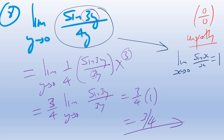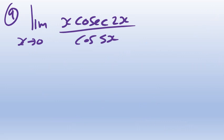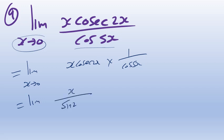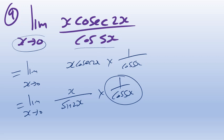Next problem: as x → 0, the denominator cos(0) = 1, which is fine. But cosec bothers me. I rewrite it as x · cosec(2x) · 1/cos(5x), which becomes x over sin(2x), times 1 over cos(5x). The 1/cos(5x) is well-behaved as x → 0. The concern is x over sin(2x), so I focus on making that look like 2x over sin(2x).